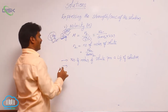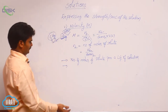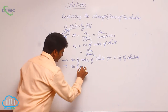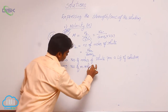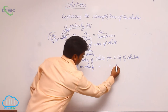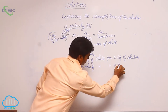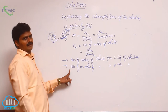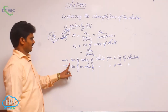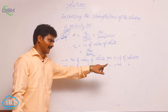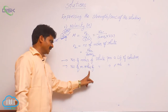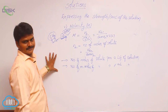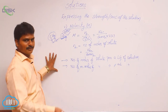We can define it in some other words. Number of millimoles of solute per mL of solution — this is also a definition of molarity. Number of moles of solute per liter, or number of millimoles of solute per mL — both are correct definitions. You can use any one.